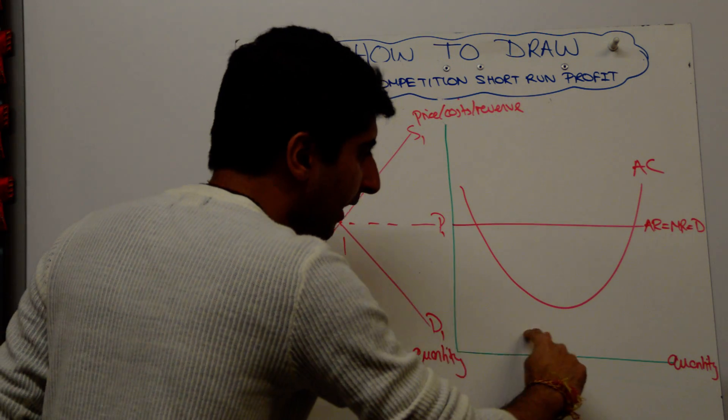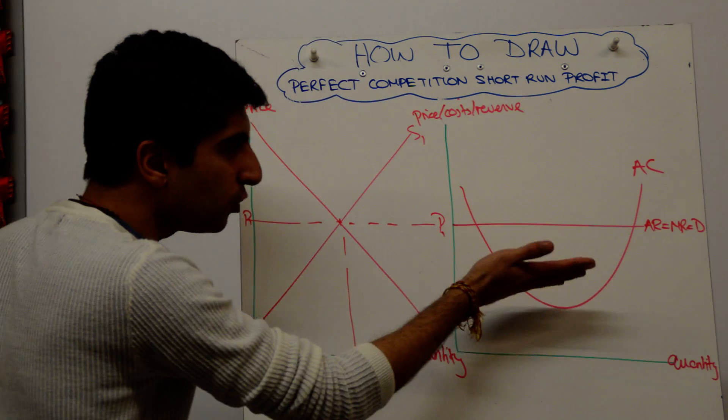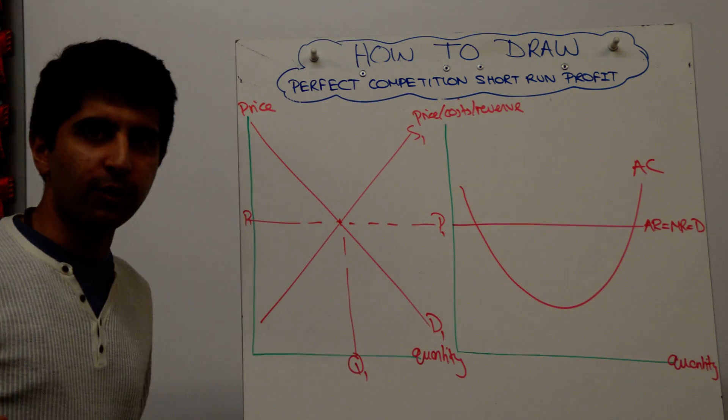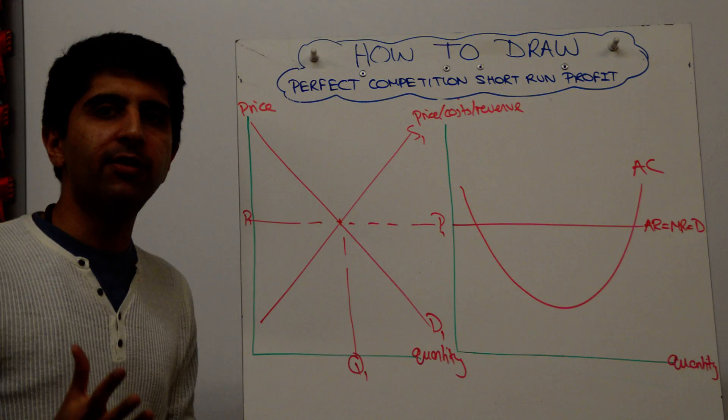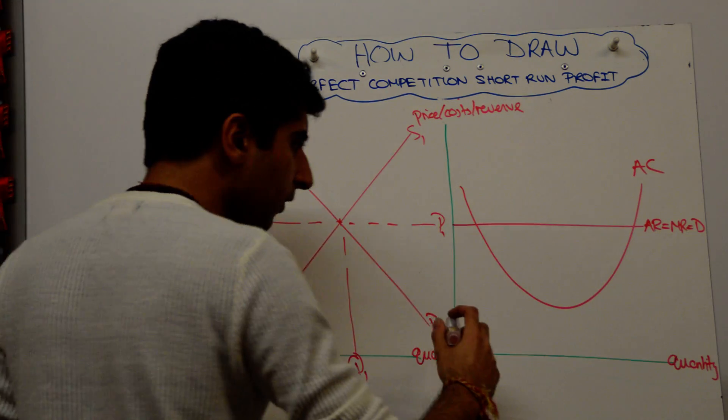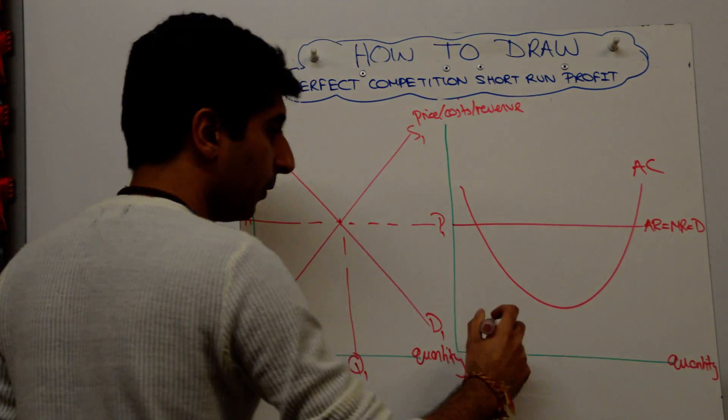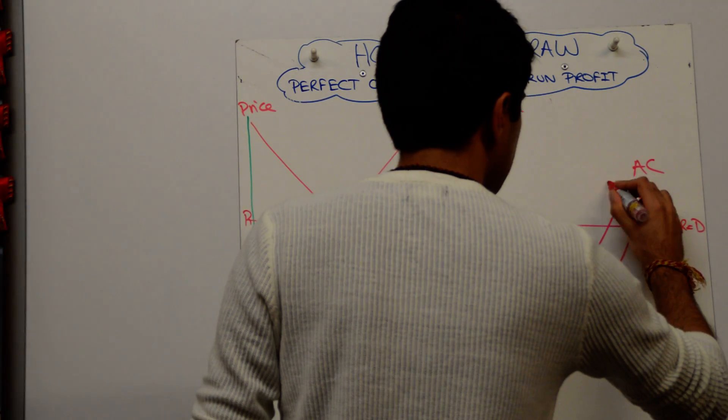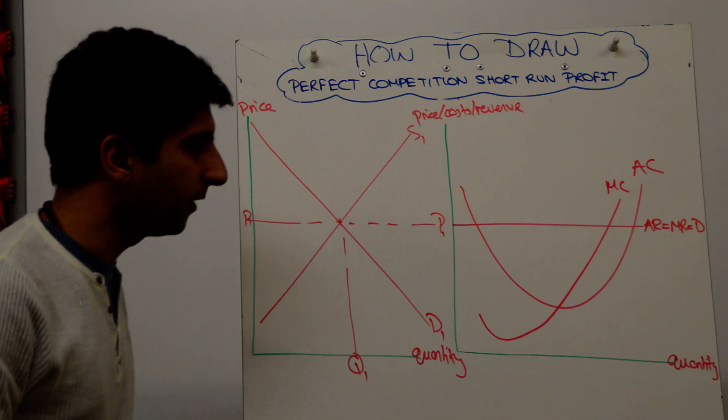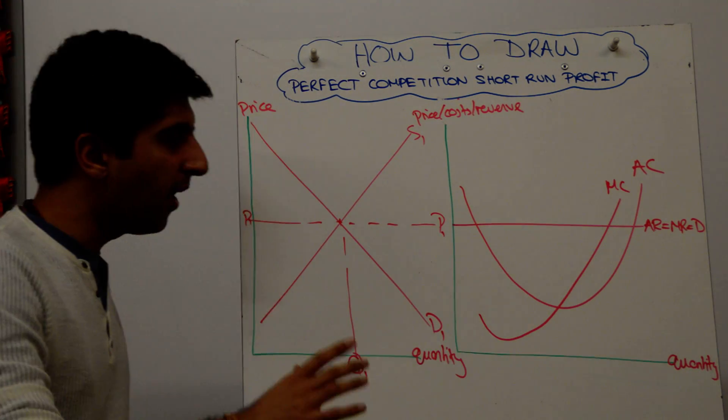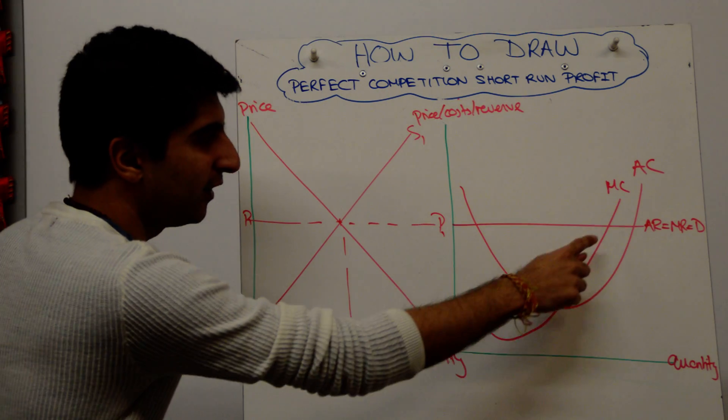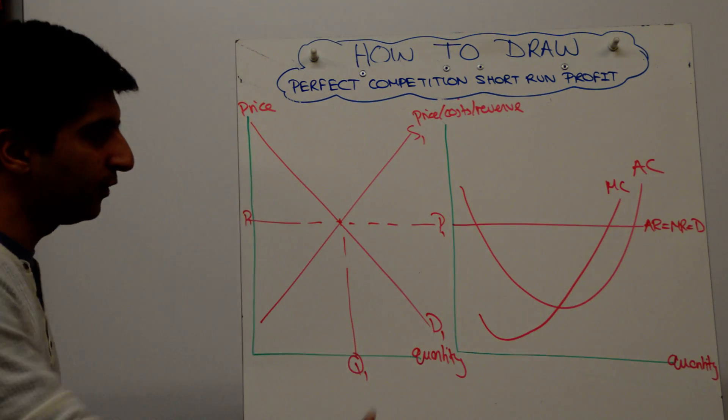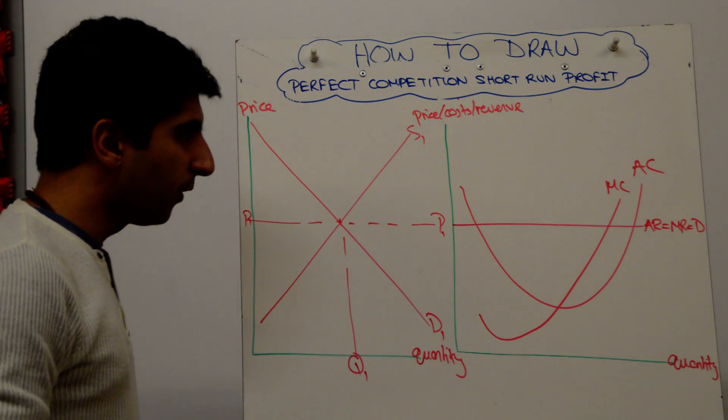And when you draw your MC, don't draw your MC too steep. Draw it a little bit shallow. That's going to be helpful as well. This is just to aid the construction of the diagram. So watch me draw my MC. It's still got to cut AC at its lowest point. But don't draw it too steep. Draw something like that. Can you see the angle I've drawn it at instead of it being quite steep? That's going to be very helpful differentiating the quantities and the positions on average cost.